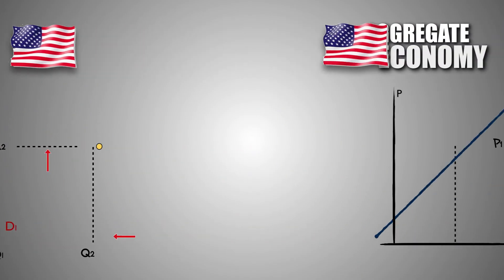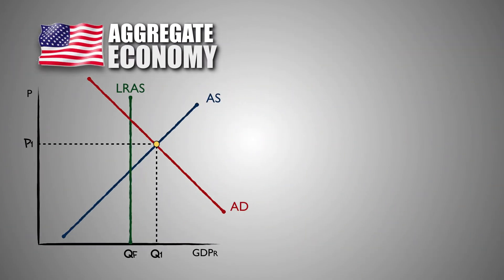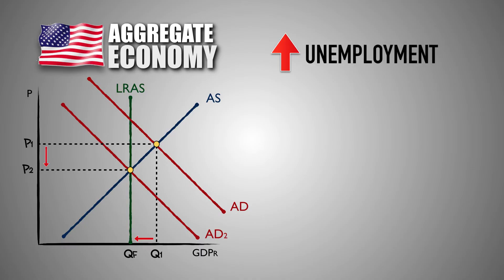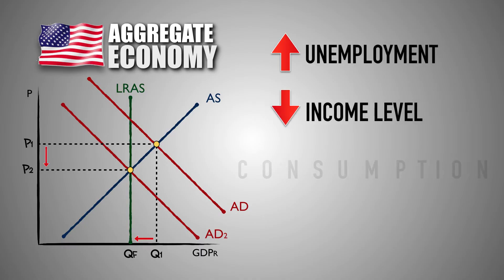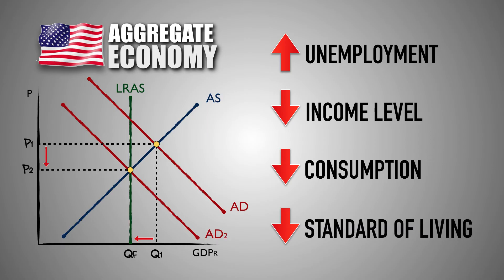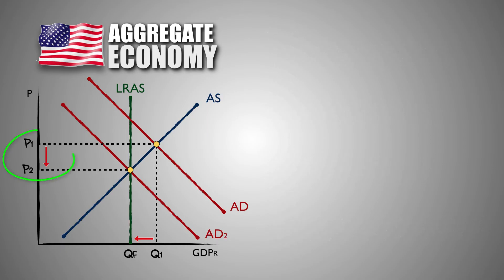As investment spending by firms decreases, the American economy will experience a decrease in aggregate demand, which signals to firms that they need to decrease the quantity of products they supply to adjust for lower demand. This will lead to a decrease in real GDP output, which increases the unemployment rate, decreases income and consumption levels, and reduces the United States' standard of living. However, look at domestic prices. The outbound capital flow from the United States may have reduced spending and led to contraction, but it also caused deflation.